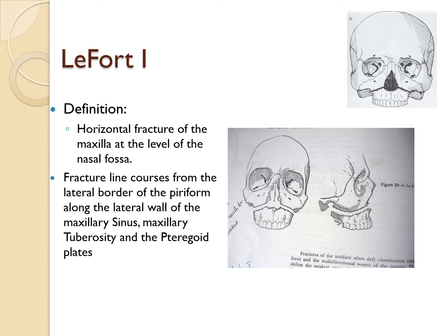The midface fracture is divided into three: Le Fort 1, Le Fort 2, and Le Fort 3. Le Fort 1 is a horizontal fracture of the maxilla at the level of the nasal floor. The fracture line in Le Fort 1 starts from the lateral border of the pyriform aperture, along the lateral wall of the maxillary sinus, then goes to the maxillary tuberosity and goes to the pterygoid plates.